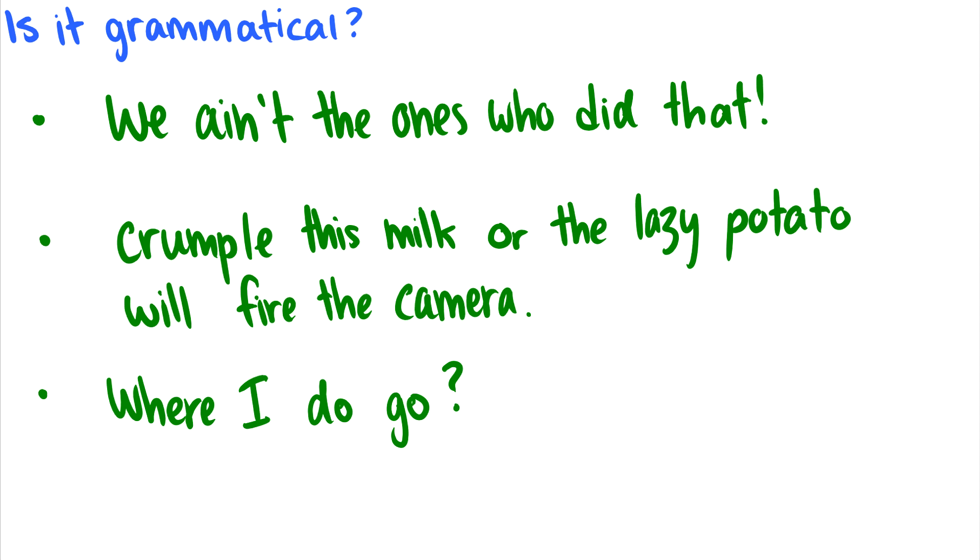So the first sentence, we ain't the ones who did that. Now, this is a perfectly fine sentence. The person speaking wants to say, we aren't the people who did that. Ain't isn't really traditional English, but when we hear a native English speaker say it, it doesn't sound terrible. It sounds okay. And for this, it's grammatical. So we just don't put anything beside the sentence. I'll put a check mark here to say it's grammatical. But usually when we write sentences, if there isn't anything, it's grammatical.